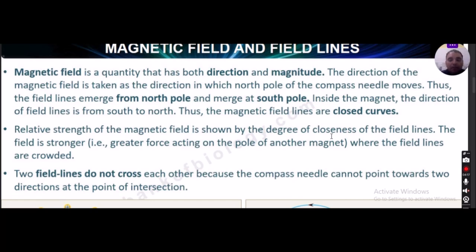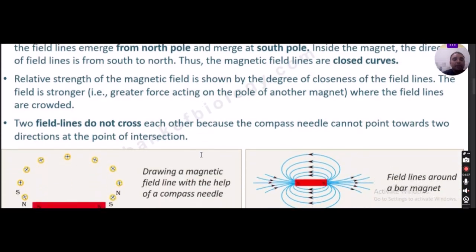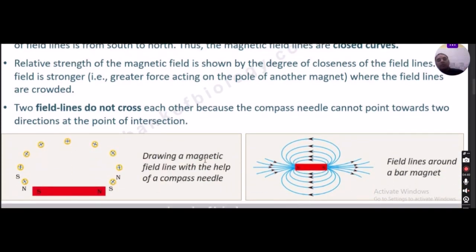The magnetic field is stronger where the field lines are closely crowded, indicating greater force acting on the pole of another magnet. An important characteristic is that two field lines do not cross each other, because a compass needle cannot point in two directions at a point of intersection.